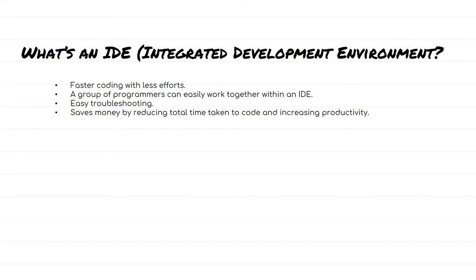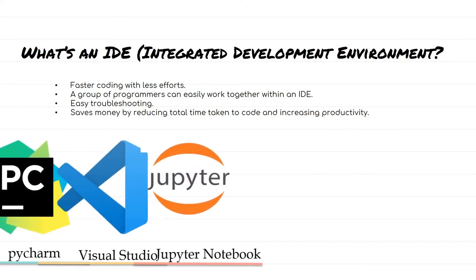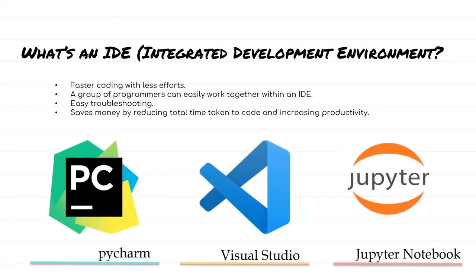There are lots of IDEs available in the market and right now the most popular ones are PyCharm, Visual Studio, and Jupyter Notebook. These are the first choice whenever anyone is going to code in Python. I did a small survey to understand what the most popular ones are nowadays, and it seems that PyCharm and Visual Studio are number one and two, and Jupyter Notebook is number three. The one which we are going to use is Jupyter Notebook.